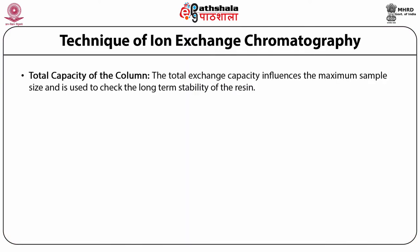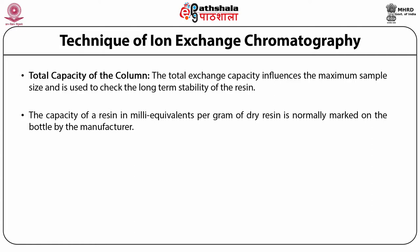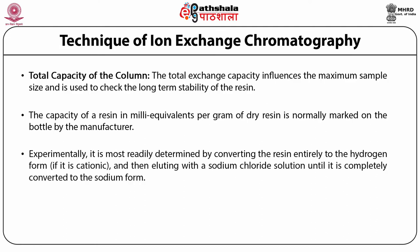An important parameter is the total exchange capacity of the column, which influences the maximum sample size and is used to check the long-term stability of the resin. The capacity of a resin in milliequivalents per gram of dry resin is normally marked on the bottle by the manufacturer. Experimentally, it is most readily determined by converting the resin to the hydrogen form and then eluting with a sodium chloride solution until it is completely converted to the sodium form. The effluent then contains hydrochloric acid in an amount equivalent to the capacity of the column, easily determined by titration with sodium hydroxide. Common resins have a capacity of 1 to 5 milliequivalents per mL, or roughly 1 to 5 N in acid or base.